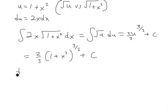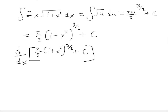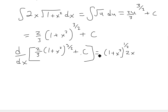We can verify this is correct by taking the derivative of the result. Bringing the 3/2 down and applying the power rule, we get 2 times (1 plus x squared) to the 1/2. Then using the chain rule, we take the derivative of x squared which is 2x, and the derivative of C is 0. So this confirms our answer is correct.